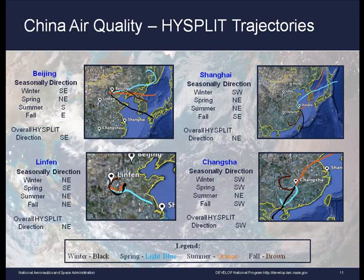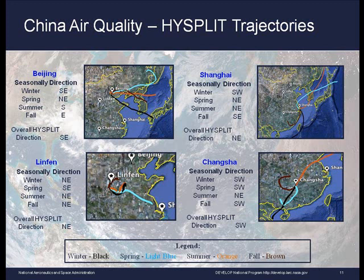This slide shows HYSPLIT model trajectory output maps for Beijing, Shanghai, Linfen, and Changsha. The prevailing wind direction as predicted by HYSPLIT model runs are depicted for each season. In the cities of Beijing and Linfen, HYSPLIT results were consistent with general local wind patterns as expected. However, some HYSPLIT results contradicted local wind pattern data, especially for Shanghai and Changsha. For example, available wind pattern data suggests that Shanghai's overall pattern is dominantly east-southeast, but HYSPLIT outputs for the same region show a north-easterly prevailing wind. The students found that the seasonal correlations for the wind pattern data were sometimes the exact opposite of what HYSPLIT predicted.